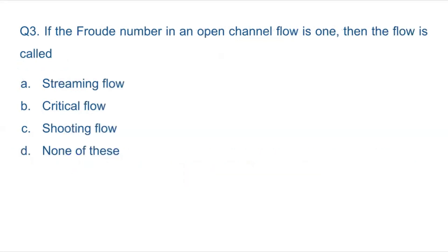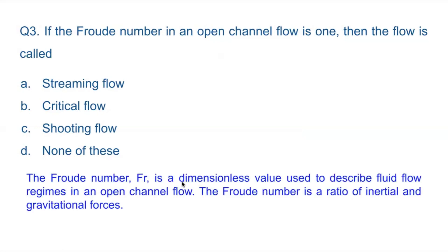Question 3: If the Froude number in an open channel flow is 1, then the flow is called — A: streaming flow, B: critical flow, C: shooting flow, D: none of these. The Froude number (Fr) is a dimensionless value used to describe fluid flow regimes in open channel flow.